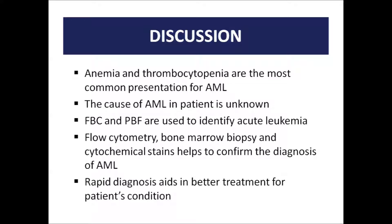Anemia and thrombocytopenia are the most common presentations of acute myeloid leukemia. The cause of AML in this patient is unknown, as she has no previous medical history and is not highly related to known risk factors. The full blood count and peripheral blood film are used to identify acute leukemia. Flow cytometry, bone marrow biopsy, and cytochemical staining help to confirm the diagnosis. A rapid diagnosis leads to better treatment, as this cancer usually gets worse quickly if not treated promptly.